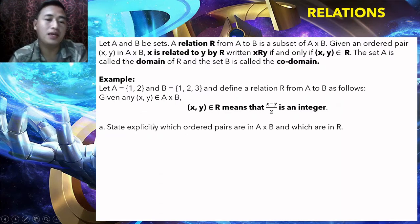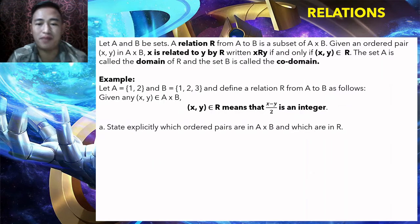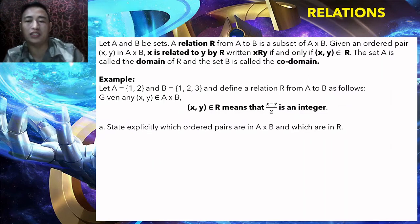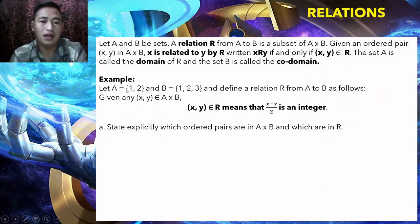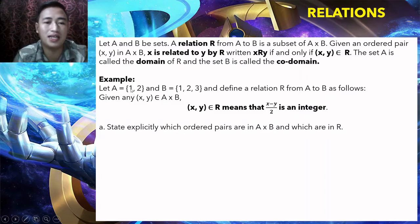To find which ordered pairs are in A cross B and in R, we first list A cross B: (1,1), (1,2), (1,3), (2,1), (2,2), (2,3). This is the Cartesian product.